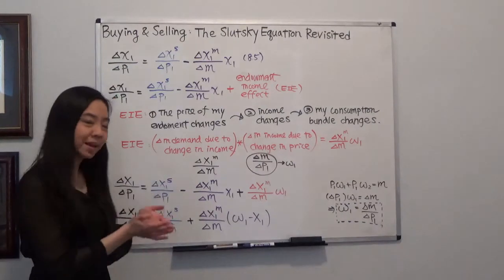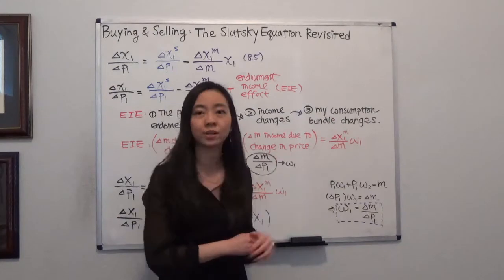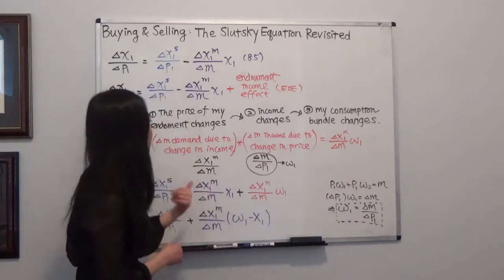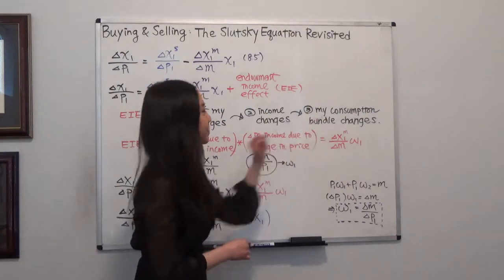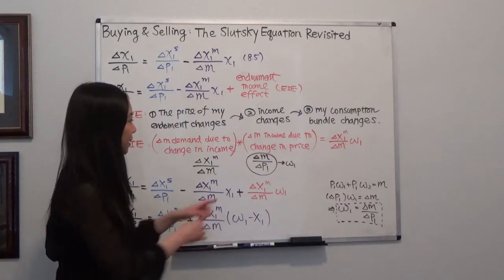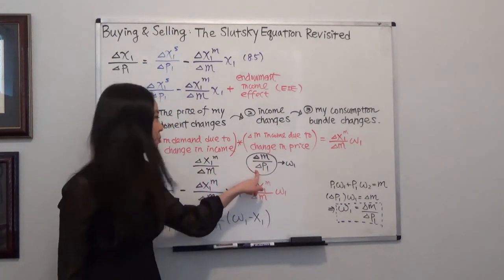And put it mathematically, changing demand due to changing income is equal to delta x1 m divided by delta m. We know that my income changes, so my demand has changed. And what is the change in income due to changing price? Well, mathematically, there will be delta m divided by delta p1.